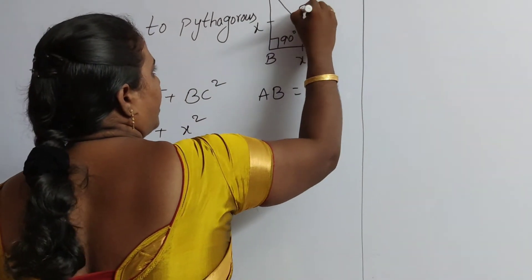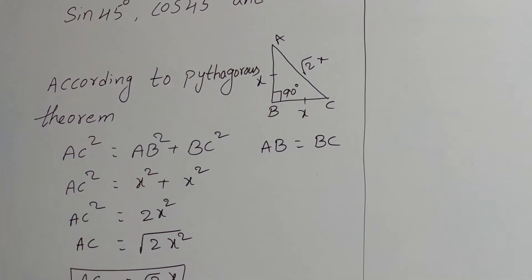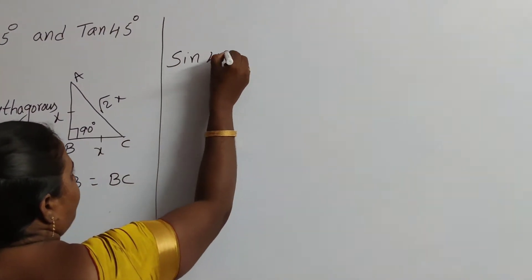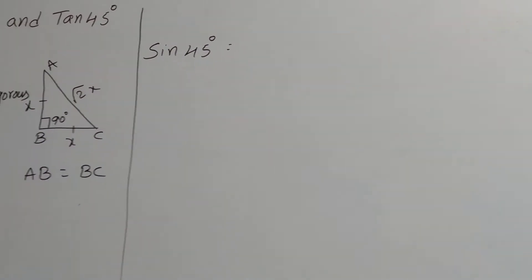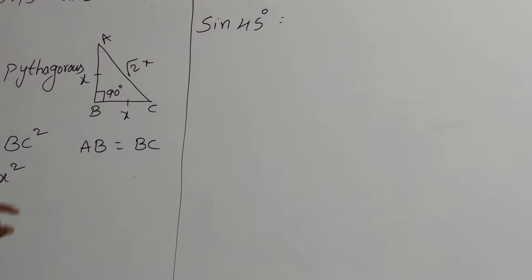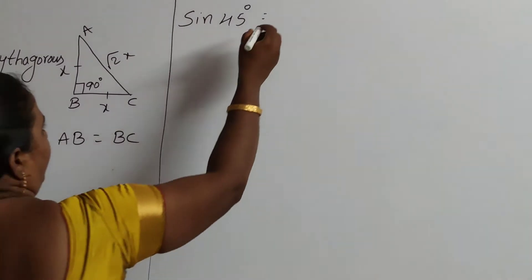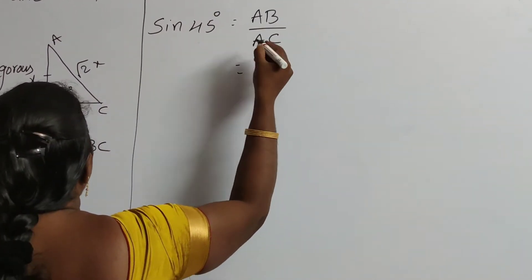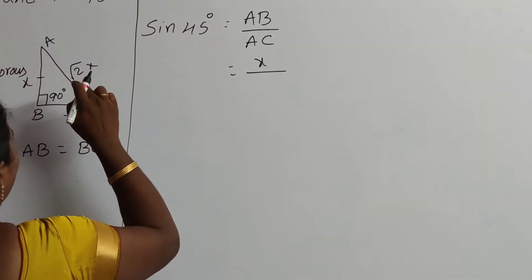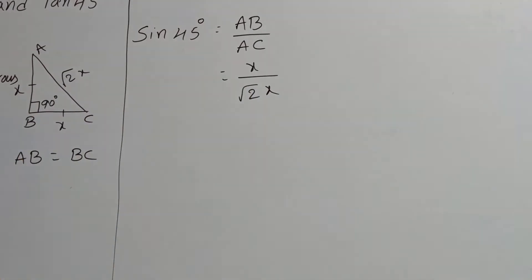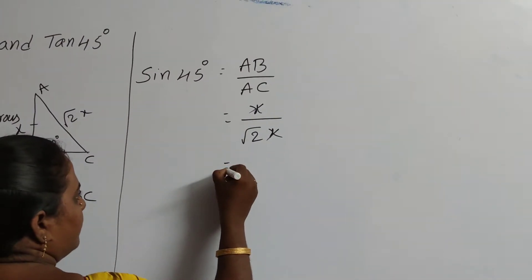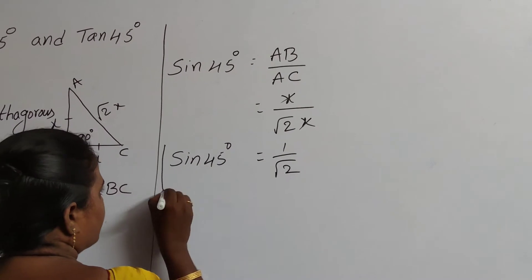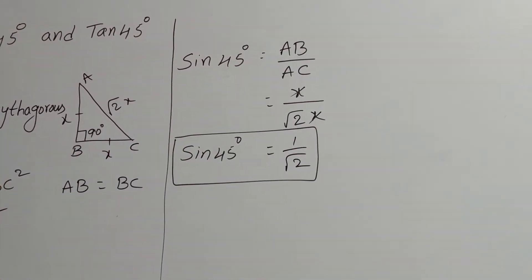Here we find the value of AC. By using that, you have to find out the value of sin 45 degrees. Sin 45 means opposite side by hypotenuse. The opposite side is AB and hypotenuse is AC. AB equals x and AC equals root 2 times x, so x cancels and sin 45 degrees equals 1 by root 2.